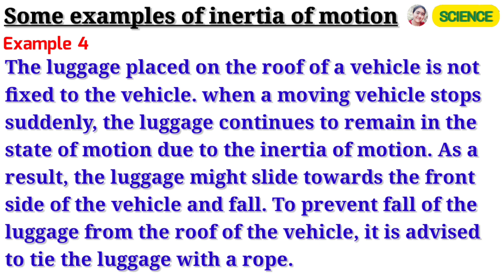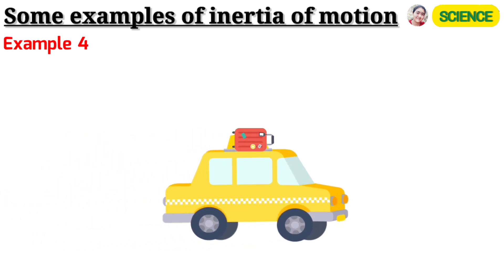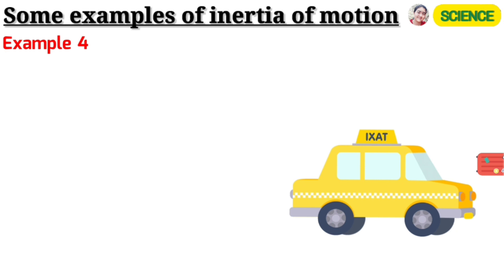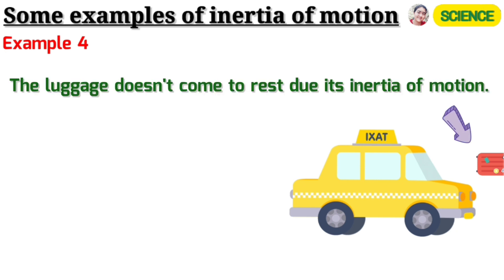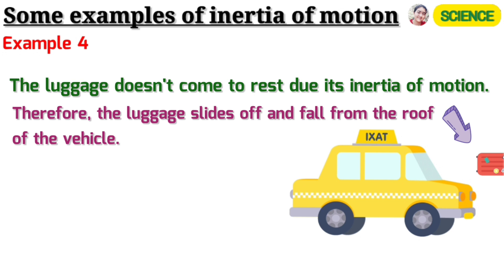Example 4: The luggage placed on the roof of a vehicle is not fixed to the vehicle. Example 5: When a moving vehicle stops suddenly, the luggage continues to remain in the state of motion due to the inertia of motion. As a result, the luggage might slide towards the front side of the vehicle and fall. To prevent fall of the luggage from the roof of the vehicle, it is advised to tie the luggage with a rope.